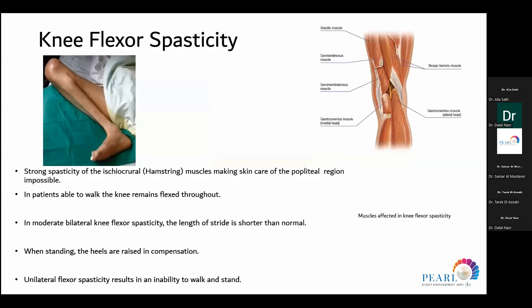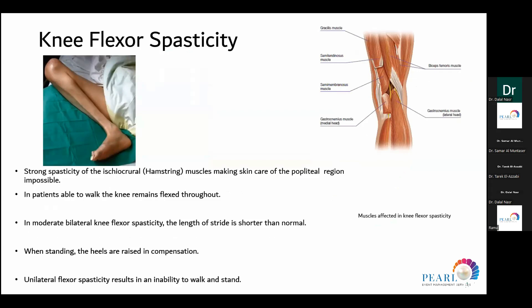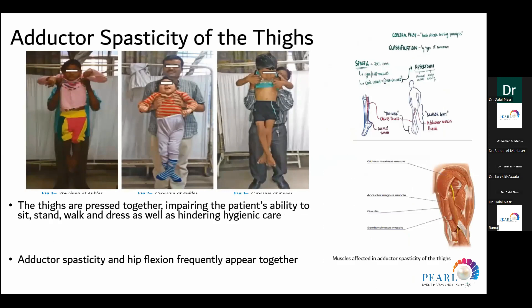Knee flexion spasticity: the targeted muscles are the hamstrings. This affects positioning — the patient is unable to open the gluteal region, hindering hygiene. Because the knee cannot extend, the patient won't be able to balance, sit, stand, or walk. Hip flexion spasticity involves the iliopsoas and hamstrings, causing shortening of the affected limb with tiptoe standing and walking, hindering the ability to walk and stand and affecting genital area hygiene.